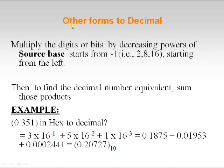Now let us see how to convert fractional forms into decimal. Multiply the digits or bits by decreasing powers of the source base starting from minus 1, starting from the left. Then to find the decimal equivalent, sum those products.